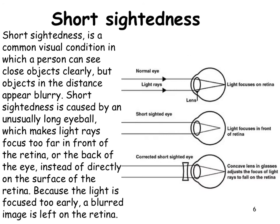Short-sightedness means the person has an eyeball that is too long, so the focus comes in too soon. To spread the rays further apart at the beginning, we use a concave — diverging — lens. Short-sightedness means a person can see close objects clearly but not things in the distance, and is caused by a long eyeball making light rays focus in front of the retina.